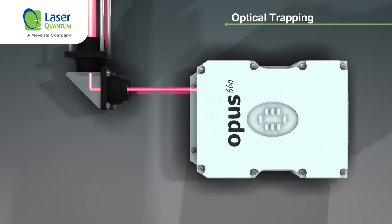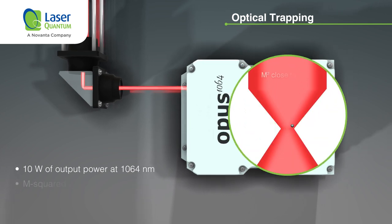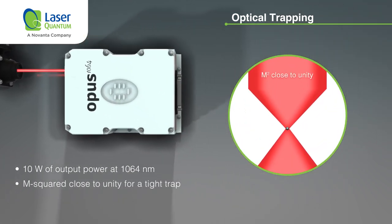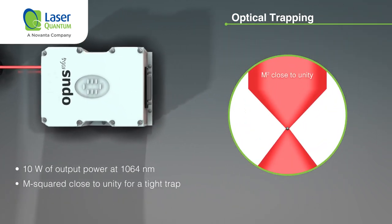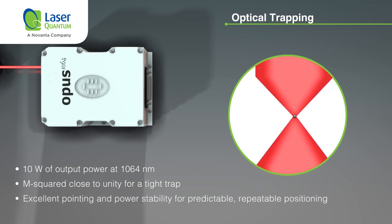The wavelength choice depends on the sample — low absorption is key to prevent sample heating and damage. The OPUS 1064 is available at up to 10 watts of output power with an M² close to unity, enabling a tight trap.